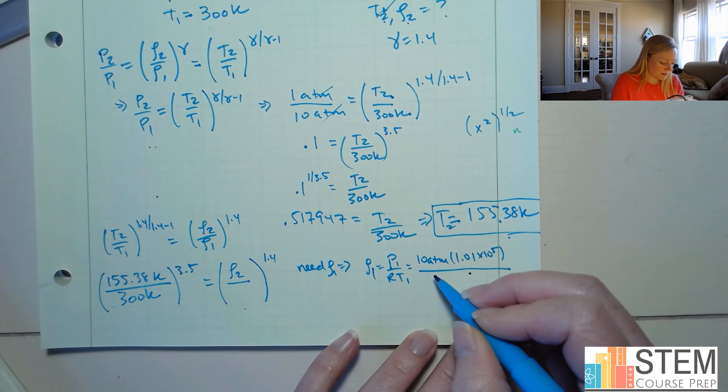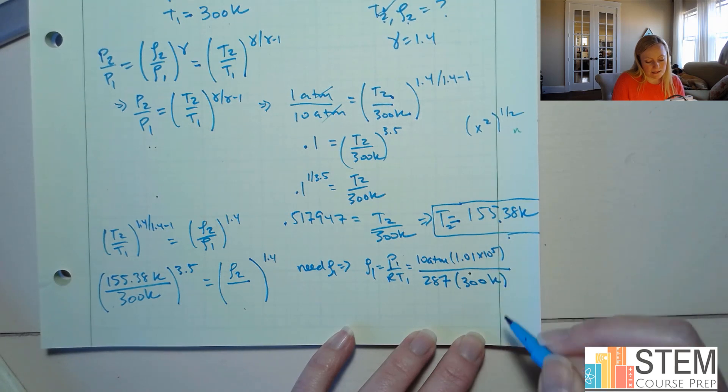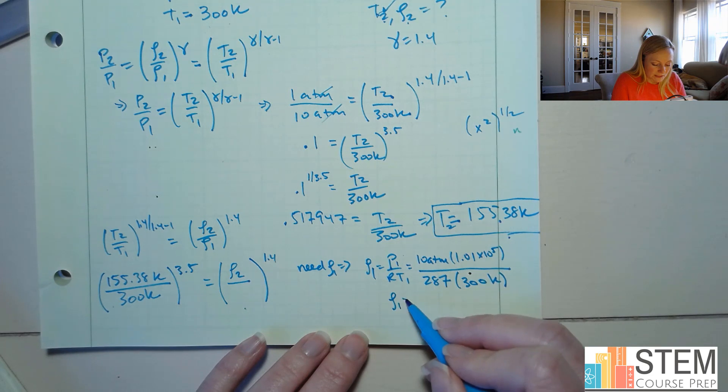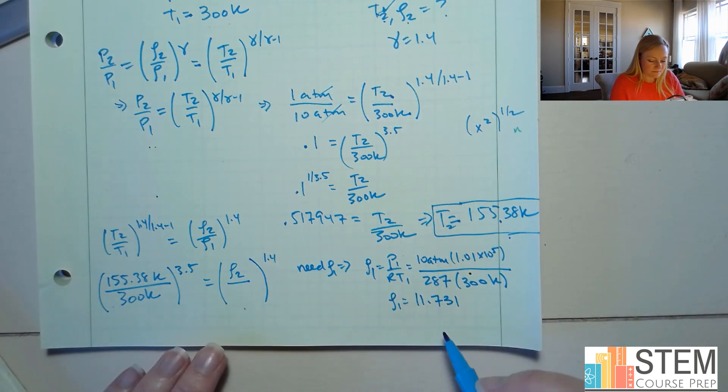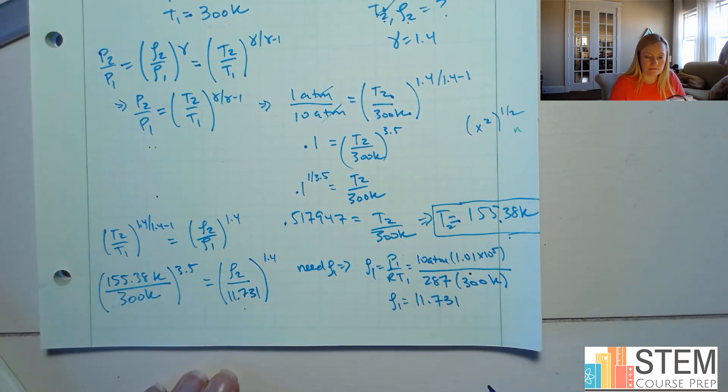and then we're going to put that over R, which is 287, and then multiply it by T, which is 300. Okay. So then that gives me my density, which will be 11.371. Now let's take that, plug it back in right here. All right.